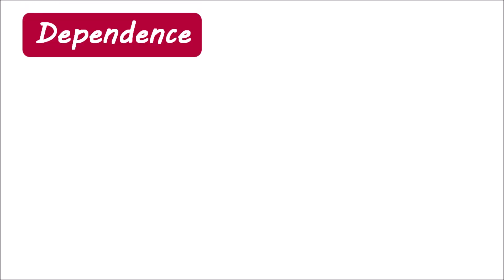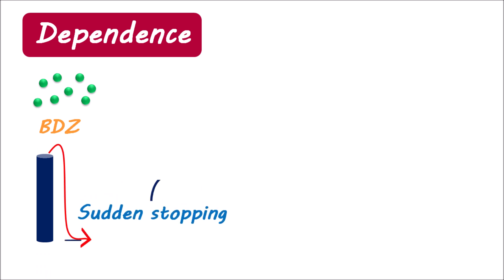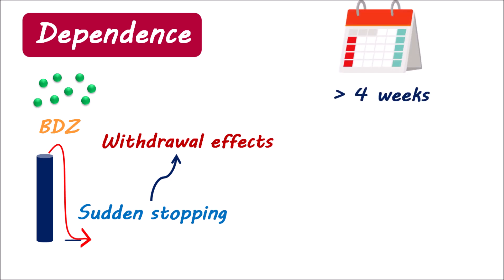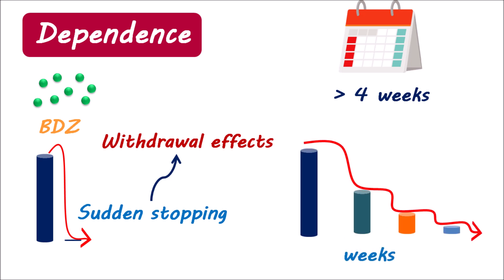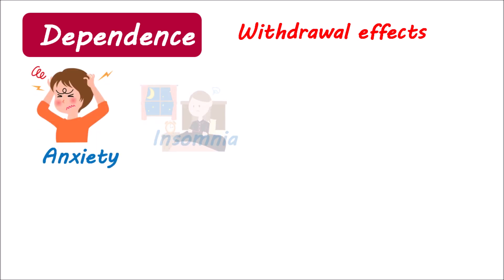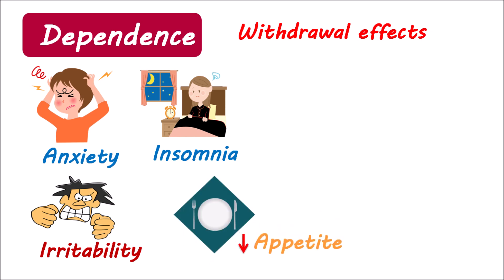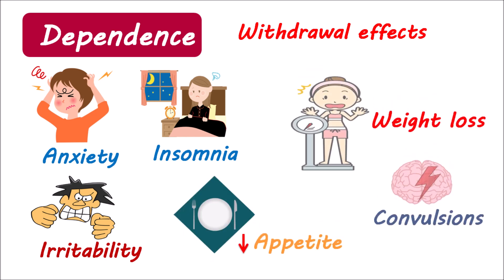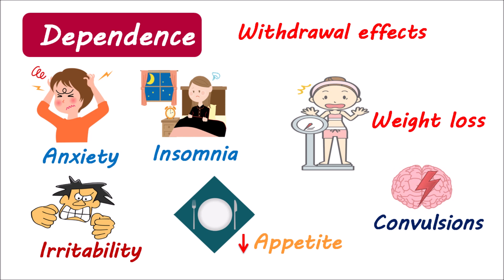Dependence is just like addiction to a drug. Even though benzos have less dependence than opioids, abruptly stopping the dose may result in withdrawal symptoms. When these drugs are used for more than four weeks, dependence becomes more apparent. In such conditions, the dose should be slowly tapered over the coming weeks to reduce withdrawal effects. Withdrawal effects may be either physiological, resulting in a few symptoms, or psychological, resulting in a craving for the drug. Fortunately, benzos show fewer psychological symptoms, so withdrawal effects mainly include physiological symptoms, which are quite opposite to the actions of benzodiazepines. Benzos can cause anxiety, insomnia, and irritability during withdrawal. Appetite is also reduced, resulting in weight loss. The risk of convulsions may be increased, so benzos should not be stopped suddenly in patients with any history of seizures.